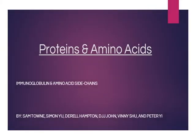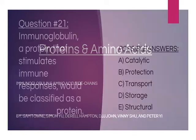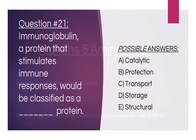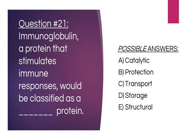Our group topic for this week is protein and amino acid — immunoglobulins and amino acid side chains. Question number 21 asks: Immunoglobulin, a protein that stimulates immune responses, would be classified as a blank protein.